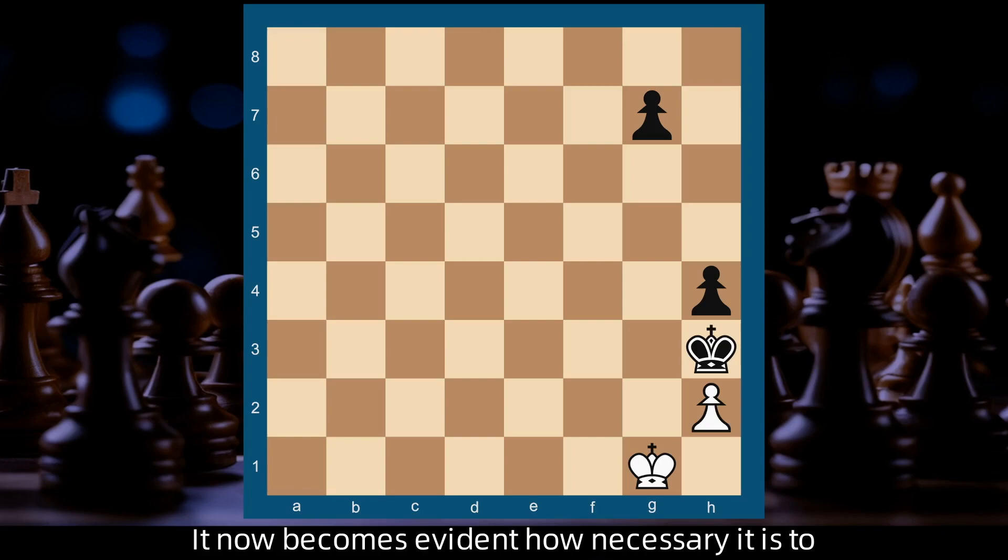It now becomes evident how necessary it is to be able to move the g pawn either one or two squares according to the position of the White king, as indicated previously. In this case, as it is White's move...